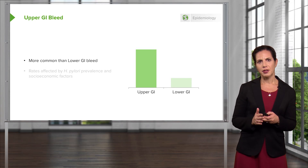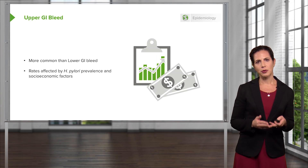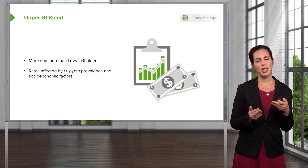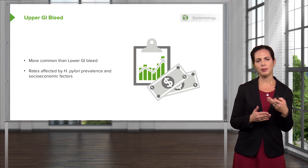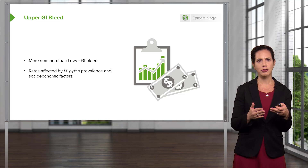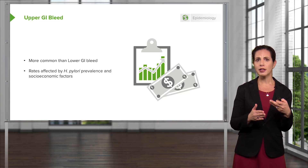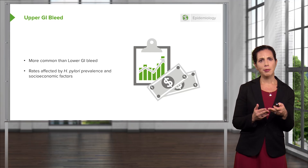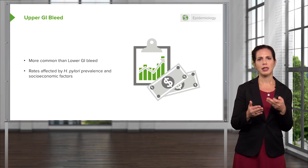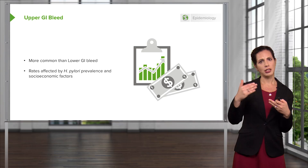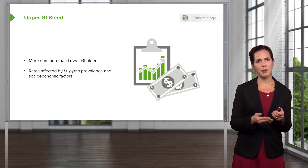Upper GI bleed is more common than lower GI bleed, and the rates are affected by H. pylori prevalence. H. pylori is a bacteria closely associated with the development of peptic ulcer disease. Testing for H. pylori can be done through blood, stool, or biopsy samples from an endoscopy. H. pylori prevalence is affected by socioeconomic factors — in areas with lower socioeconomic status, rates of H. pylori are actually higher.